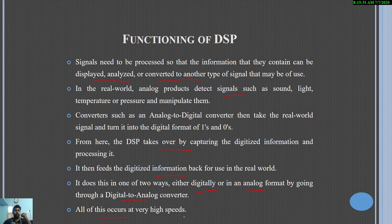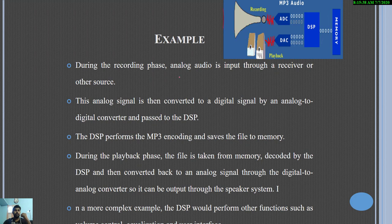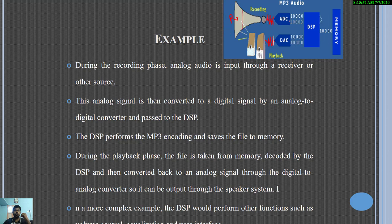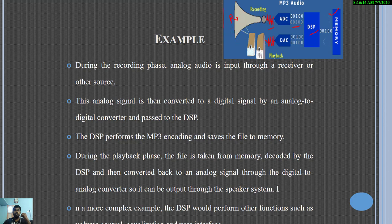All of this occurs at very high speed — the speed of processing will be very high. As an example, here we see a receiver receiving some analog signal as an input. It is then sent to the ADC converter in order to convert the analog into a digital signal. This digital signal is then given to the DSP system — the digital signal processor — where it is processed and interpreted, and given to memory, which may be internal or external.